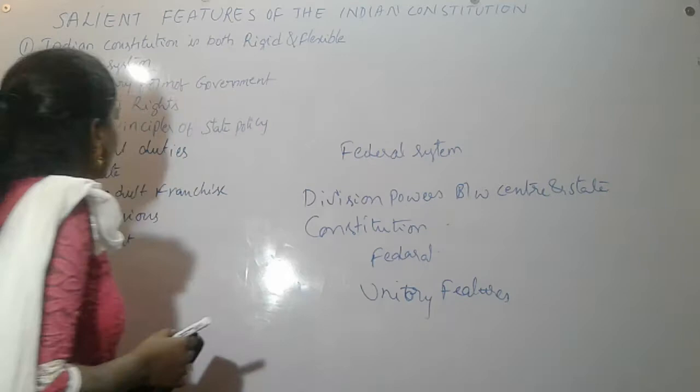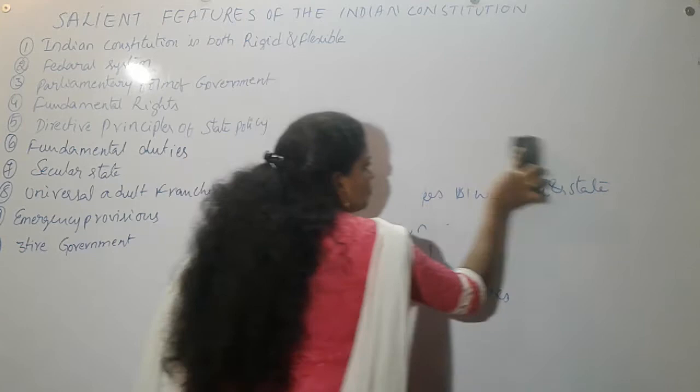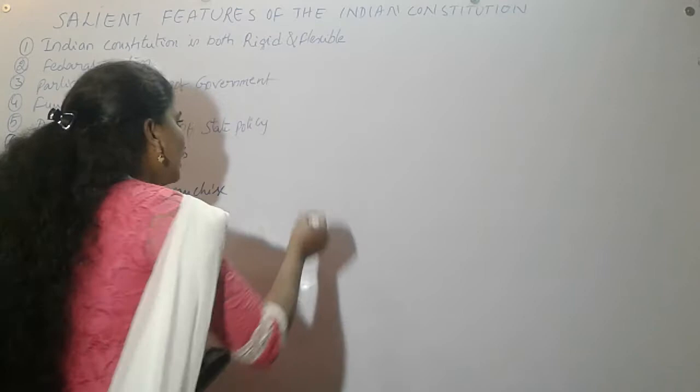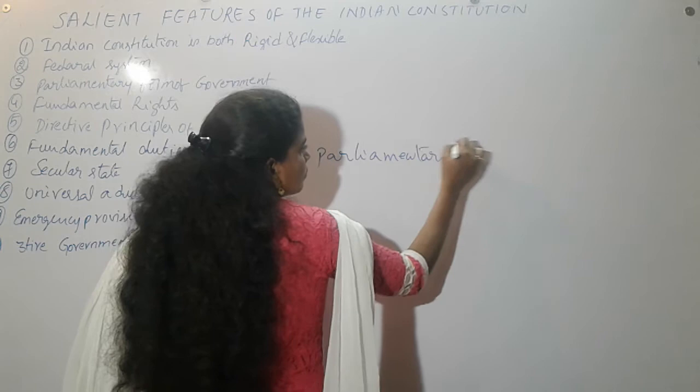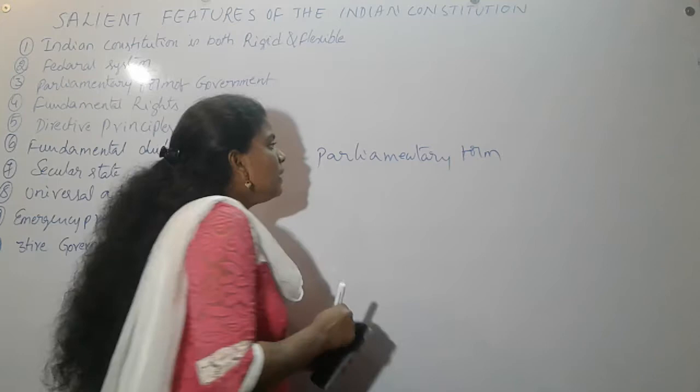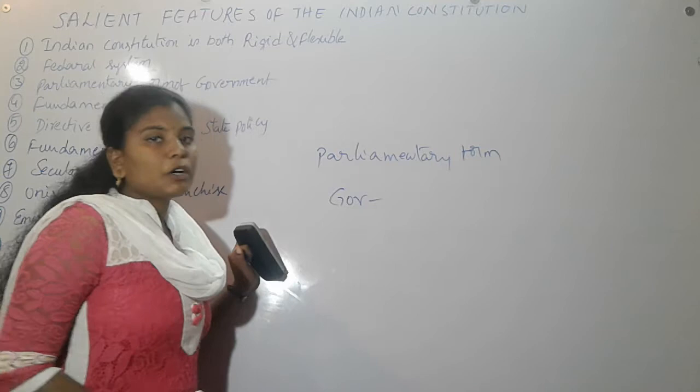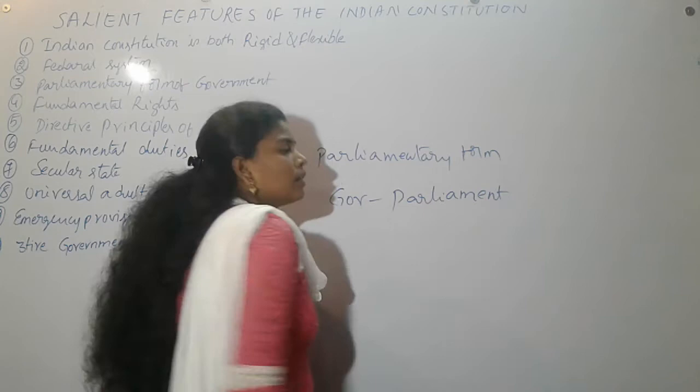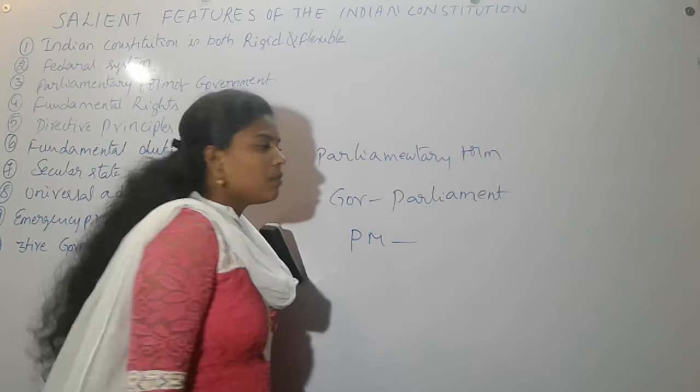The third feature is the parliamentary form of government, which was taken from Britain. The government is responsible to Parliament. The Council of Ministers headed by the Prime Minister is completely responsible to the Lok Sabha.